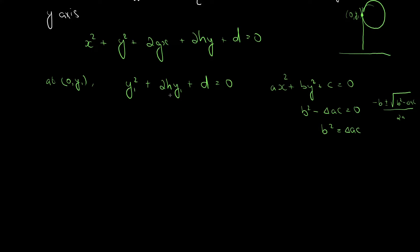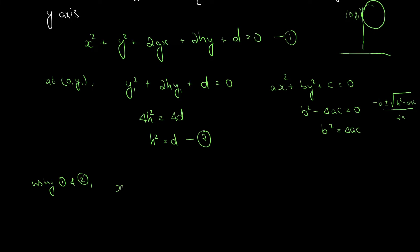Here b is 2h, so b² = 4h² = 4 × 1 × d, which gives h² = d. Using this substitution (equations 1 and 2), the equation of a circle that has the y-axis as its tangent takes the form: x² + y² + 2gx + 2hy + h² = 0. This is the required family equation (equation 3).